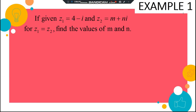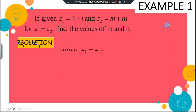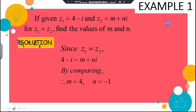The question asks you to find the values of m and n, where z1 equals 4 minus i and z2 equals m plus ni, and z1 equals z2. By comparing, 4 minus i equals m plus ni, so m is equal to 4 and n is equal to negative 1.